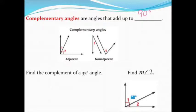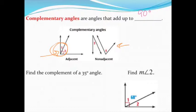Complementary angles are angles that add up to 90 degrees. You'll often see complementary angles indicated using a right angle symbol, so you'll know that's 90 degrees. Sometimes the angles may not be right next to each other — they may be non-adjacent — even though they are still complementary. That's the key vocabulary you need to know for this.